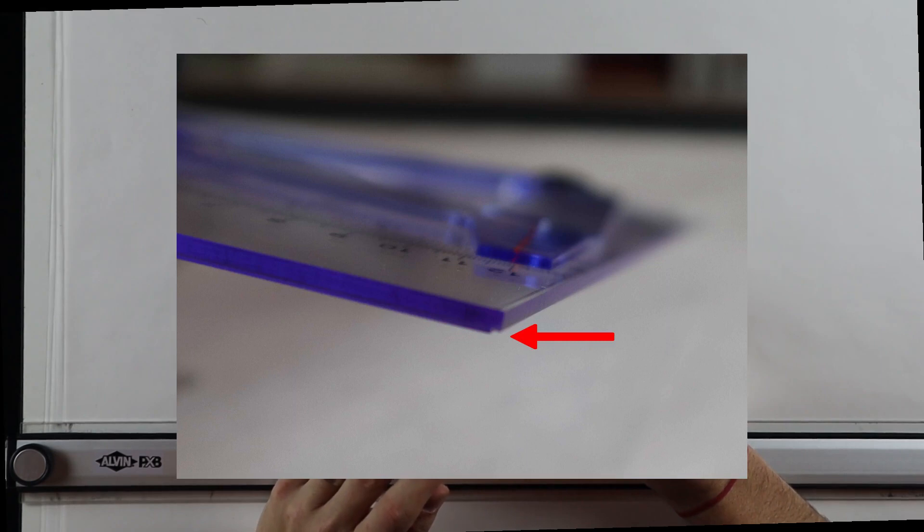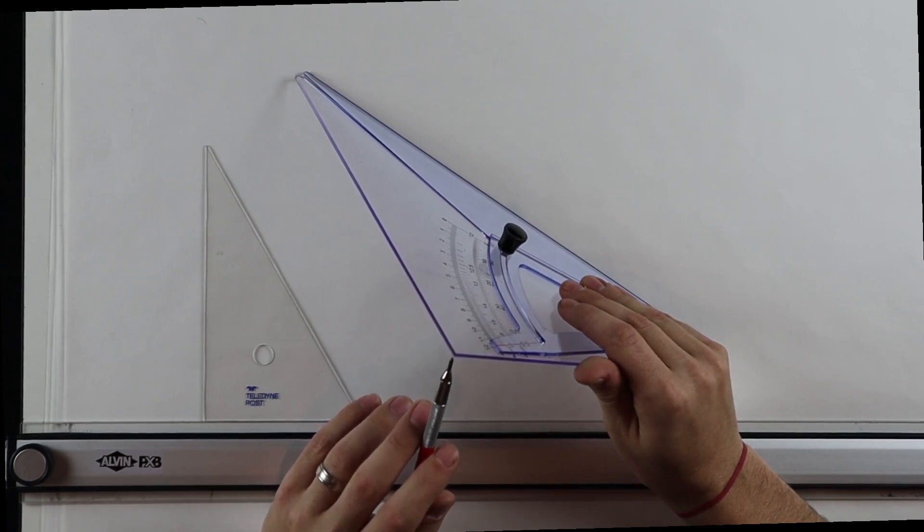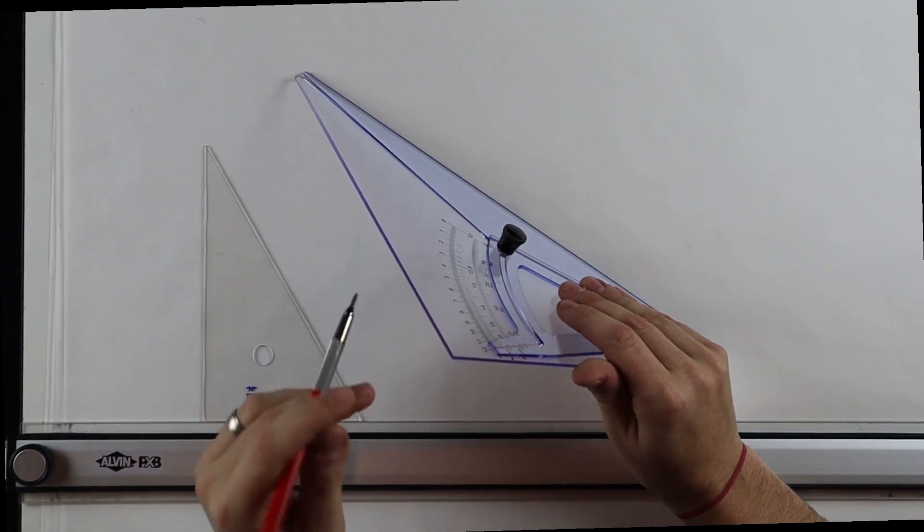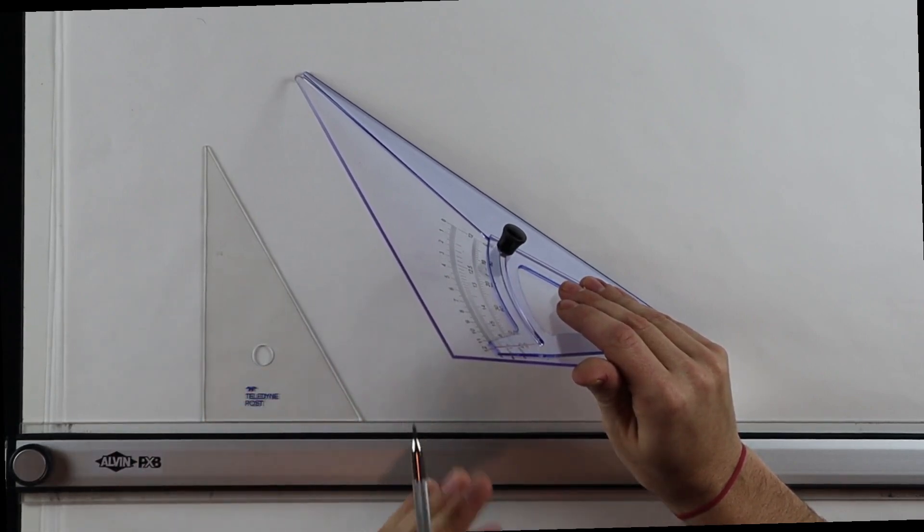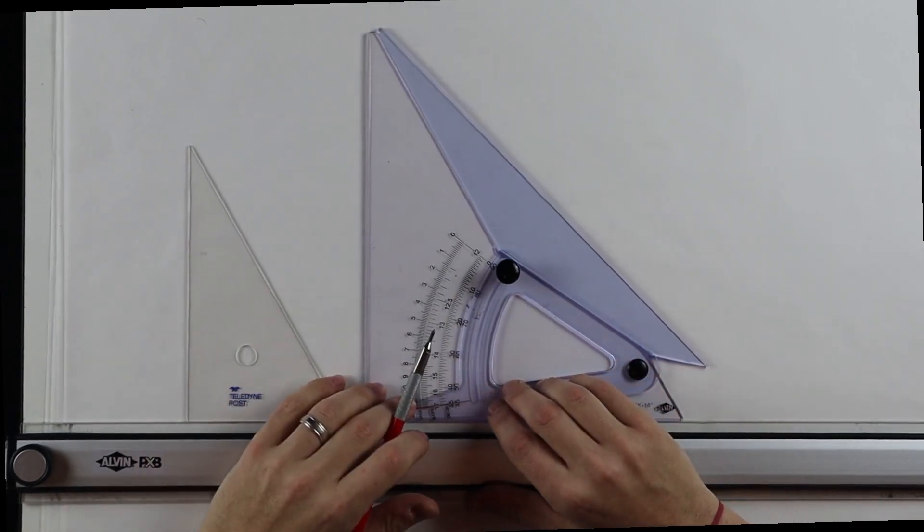So if I lift this up, and again it's going to be difficult to see so I'll show up a picture, you can see that it has a beveled edge. The edge has an indentation in it so that I can ink it, then I can move the triangle away and none of the ink has bled underneath the triangle. So when I move the triangle, none of the ink is going to smudge. Makes it very nice and useful for the purposes of inking as well.